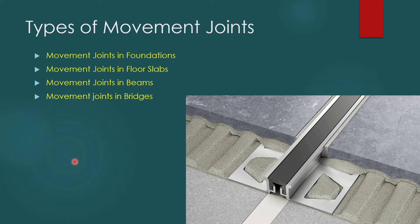Types of Movement Joints in Structures: Movement Joints in the Foundations, Movement Joints in the Floor Slabs, Movement Joints in the Beams, and Movement Joints in the Bridges. These are the areas mostly where joints are defined.